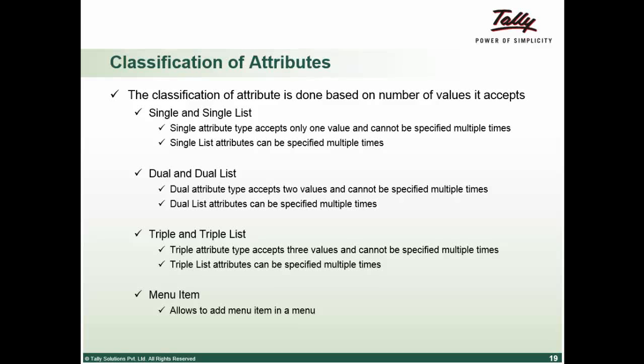Do not worry and stress on the examples much because as we proceed we will use them. You will understand what is a dual and a dual list and how we have categorized them. A dual list type attribute accepts two values and can be specified multiple times. For example, a set attribute at part level takes two parameters, the variable name and the variable value, and the set attribute can be used multiple times.